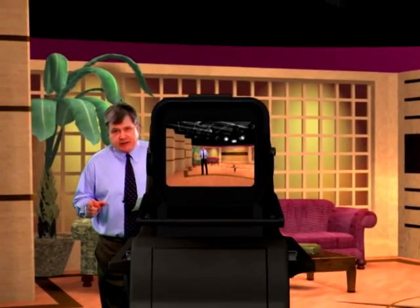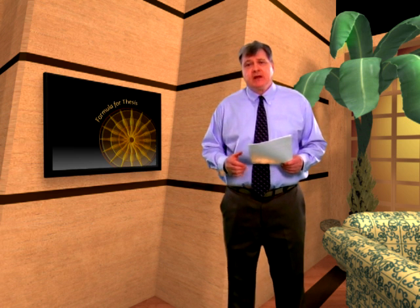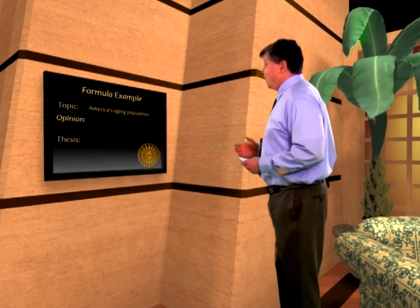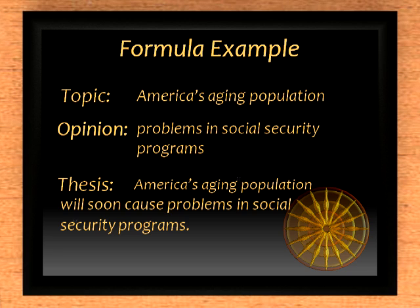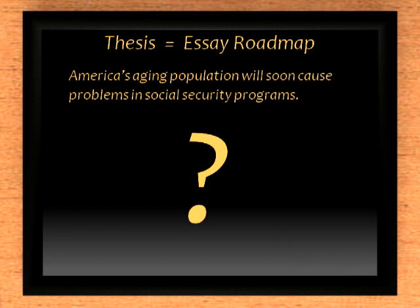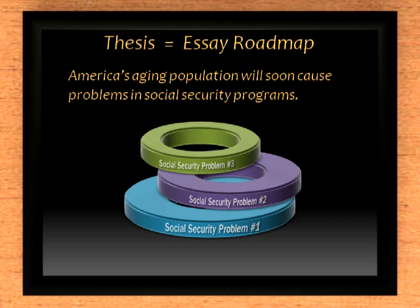This thesis-as-roadmap strategy can be used with a variety of topics that you encounter in school. Let's take a look at a few in some of the typical classes where you have to write essays. This first topic could come from a history, economics, or sociology course, and is also often encountered in the healthcare field. Our topic is America's aging population. Our opinion: could cause problems in social security programs. Put those two together and we have our thesis: America's aging population will soon cause problems in social security programs. What must come in this essay to prove, illustrate, or corroborate that thesis? Clearly, there will have to be a discussion of social security problem number one, number two, number three, and so on.